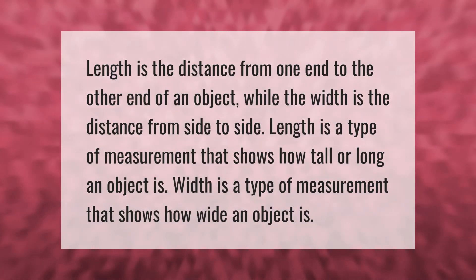Length is the distance from one end to the other end of an object, while the width is the distance from side to side. Length is a type of measurement that shows how tall or long an object is. Width is a type of measurement that shows how wide an object is.